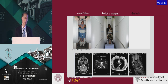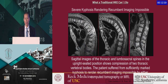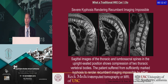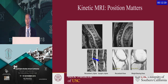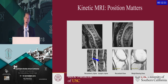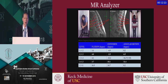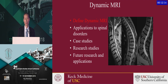These are open MRIs, so they may be more comfortable, especially for claustrophobic patients. For children, it's more palatable because they can sit on their parent's lap. Patients with severe deformities who can't comfortably lie in a standard MRI can also benefit. Position matters not just in the spine, but across the musculoskeletal system — the shoulder, knee, foot, and ankle. This is also a very powerful research tool for accurate measurements of spinal structures.